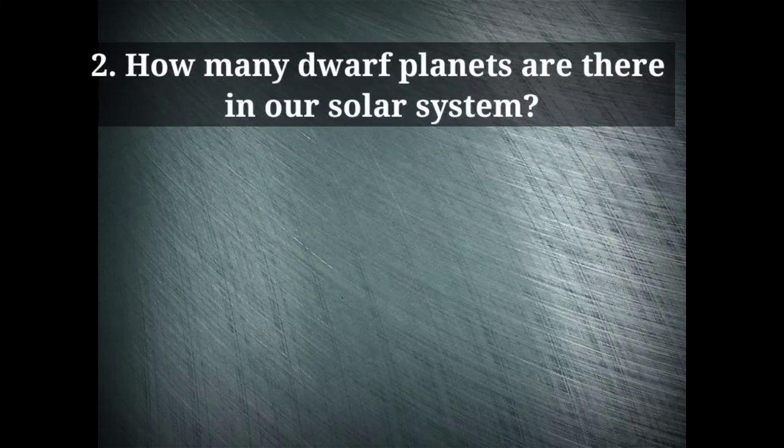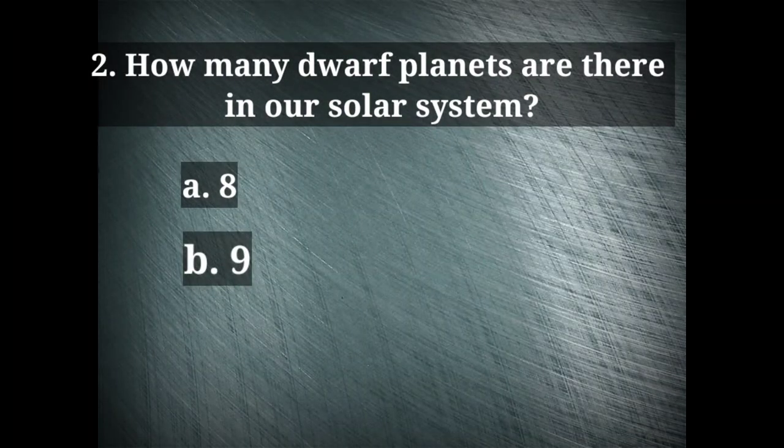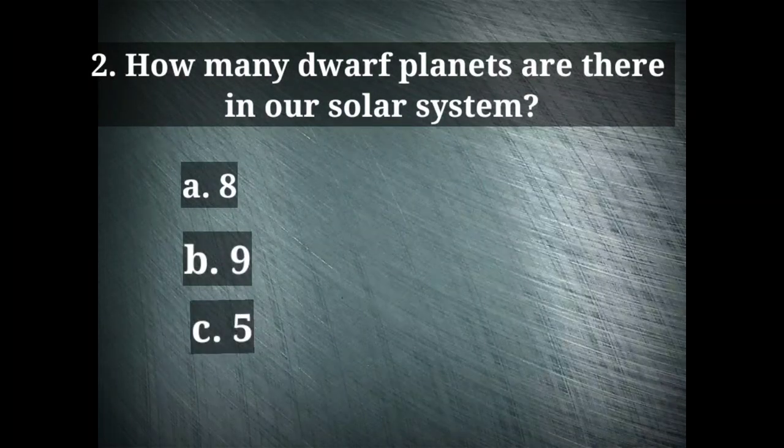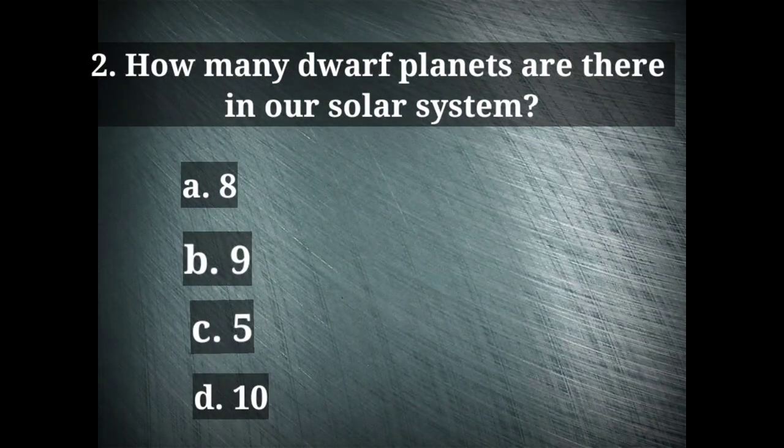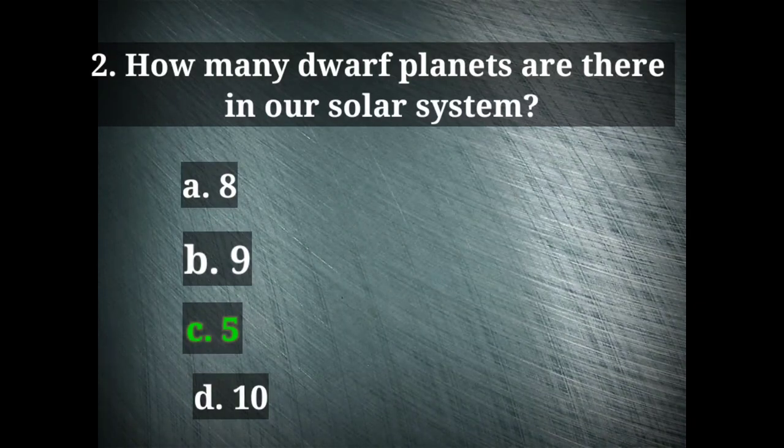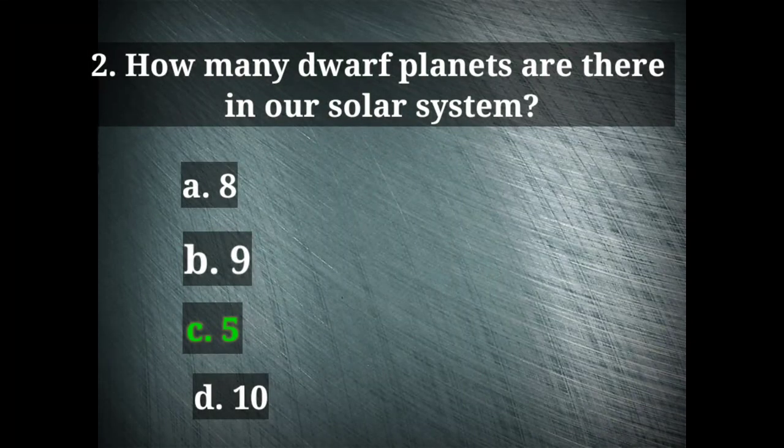Next question is: how many dwarf planets are there in our solar system? Options are eight, nine, five, and ten. We have only five dwarf planets in the solar system. There is Pluto, Haumea, Makemake, Ceres, and Eris. These are the five dwarf planets in our solar system.